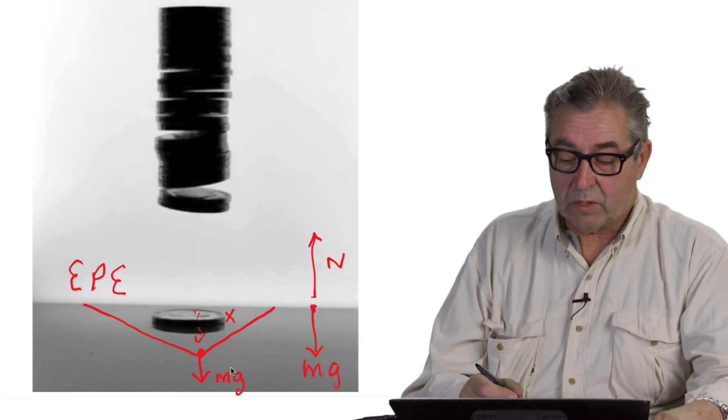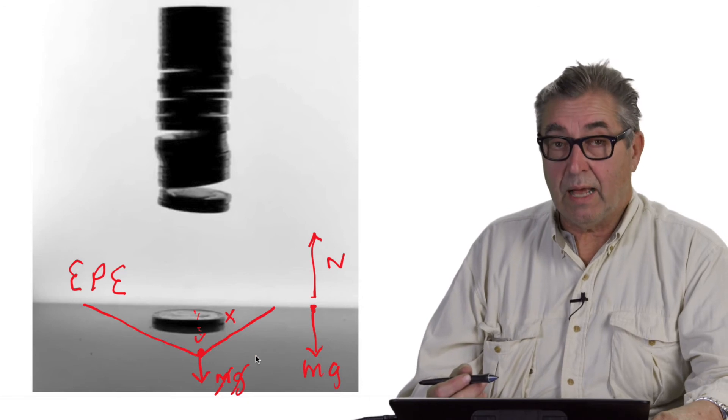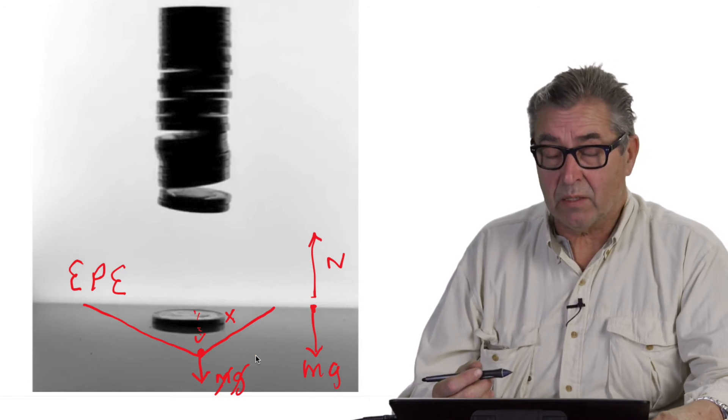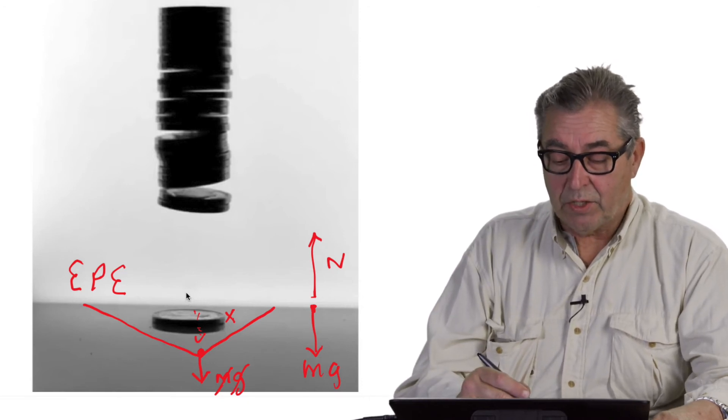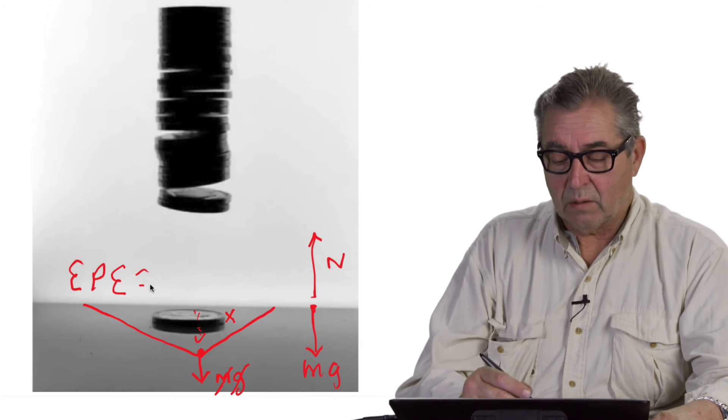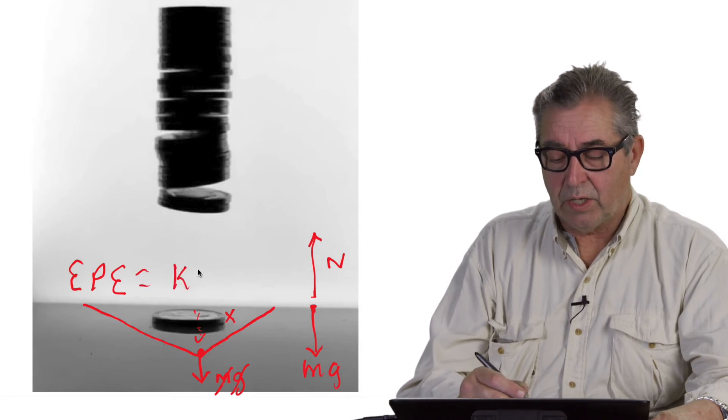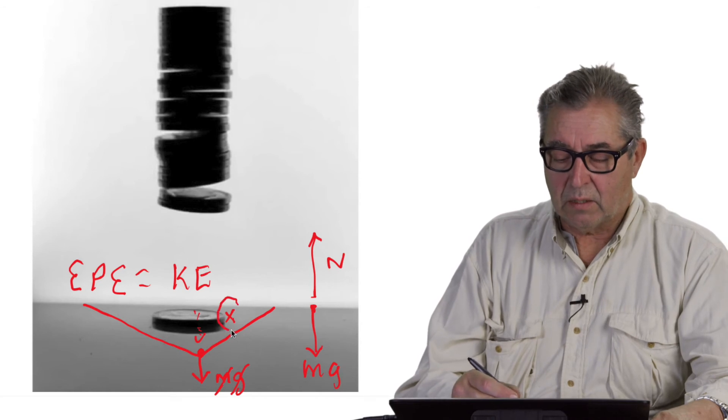When weight is suddenly removed, the elastic potential energy remains, and that energy is then converted to kinetic energy in the coins, as the distance of deformation of the floor decreases to zero.